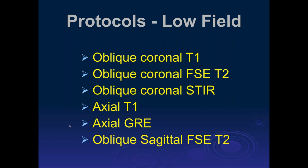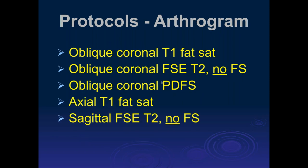For the low-field protocol, we use a different technique because PD fat sats are not very robust at low field — you can't separate fat and water peaks well, so fat-suppressed sequences result in significant signal-to-noise loss. At low field we do T1, T2, STIR coronal, and T1 axial. STIR axials are not great for labral resolution, so I prefer a gradient echo technique. We also use sagittal T2-weighted images perpendicular to the coronal sequences.